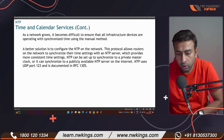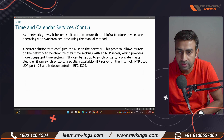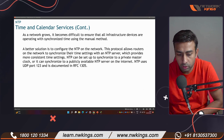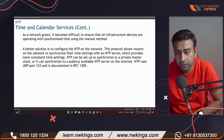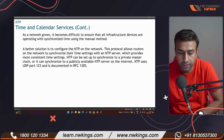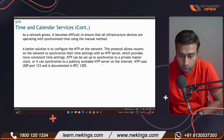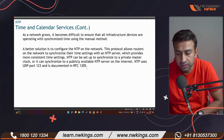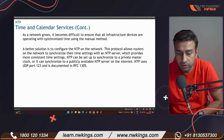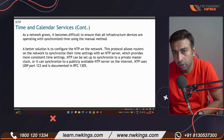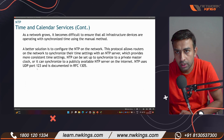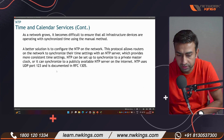As a network grows, it becomes very difficult to manage the time on all devices. NTP is a better solution for company networks. NTP has RFC 1305 as its research paper, and it uses UDP port number 123 — so it uses both TCP and UDP.